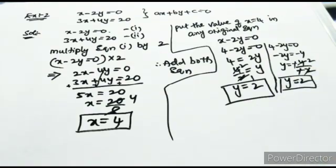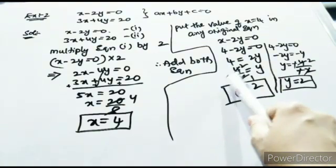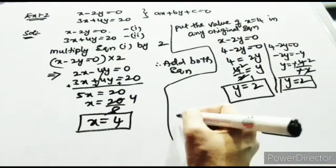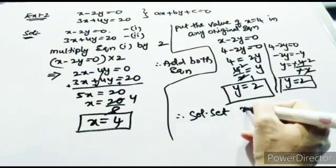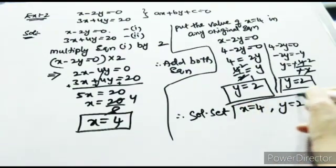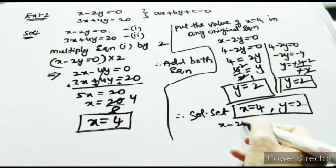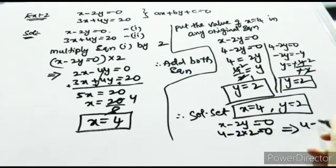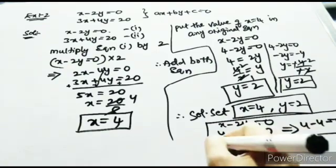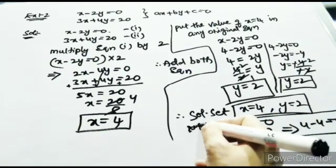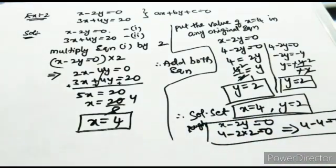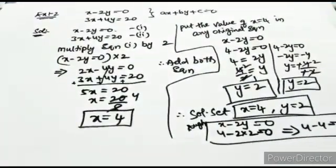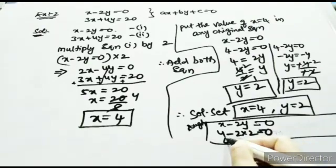Hence, the solution set is x equal to 4, y equal to 2. To check whether the solution is correct, substitute the values back into the original equation. For x minus 2y equal to 0: substituting x equal to 4 and y equal to 2 gives 4 minus 4 equal to 0, which is correct. So the solution set is verified.